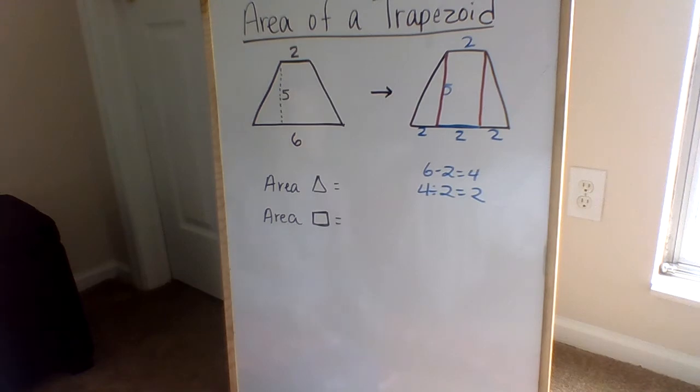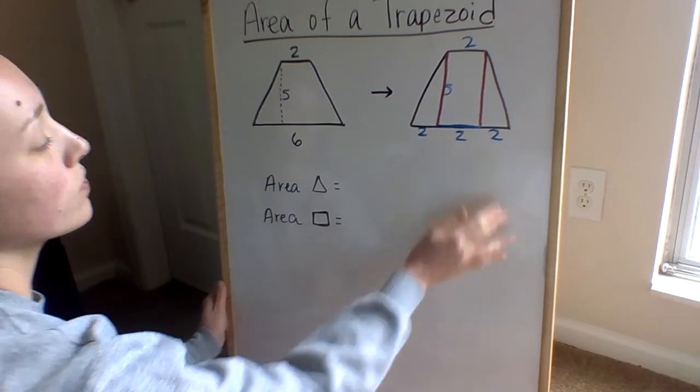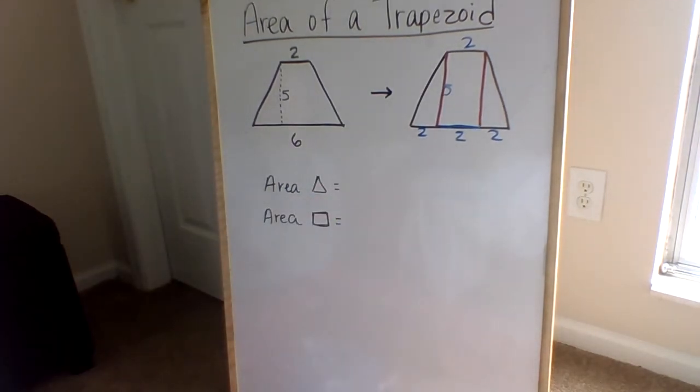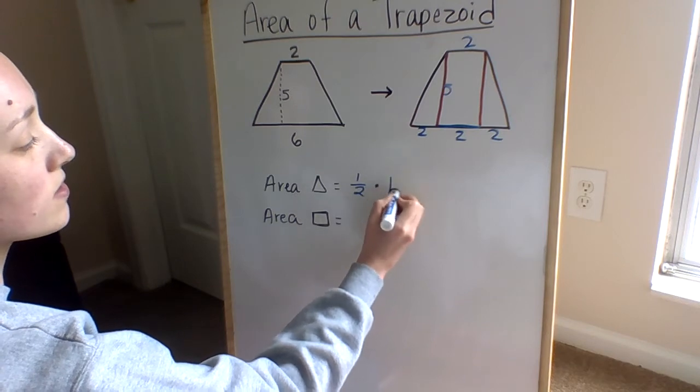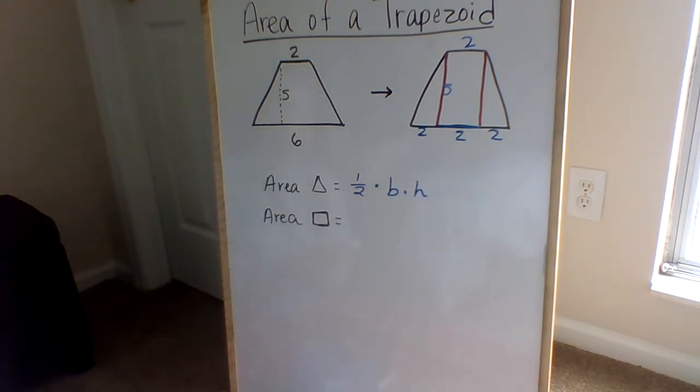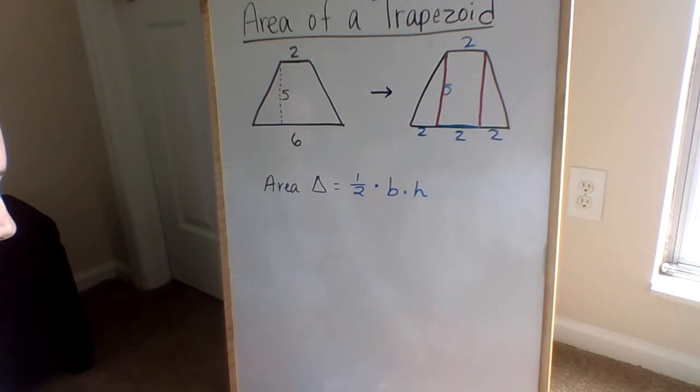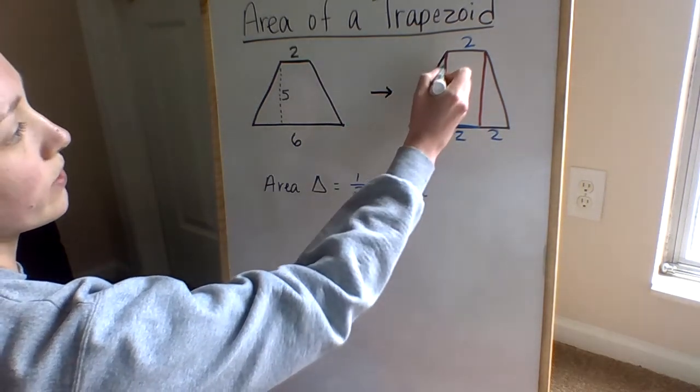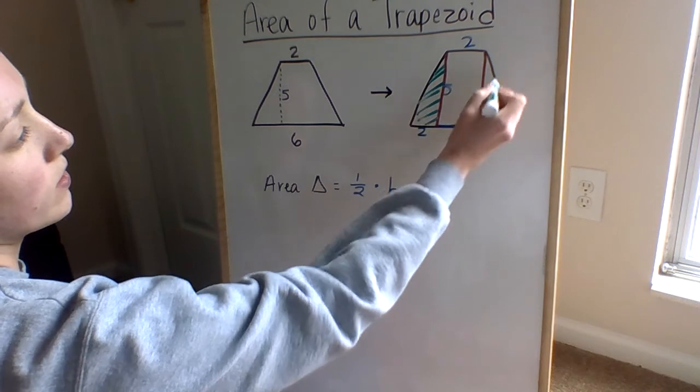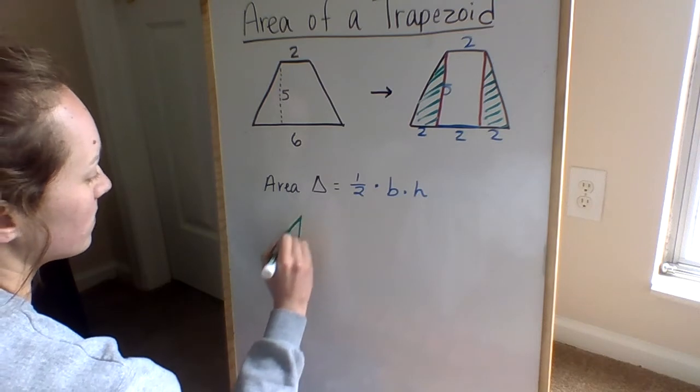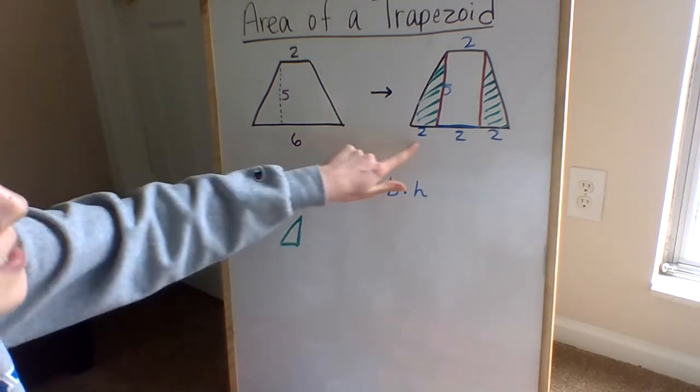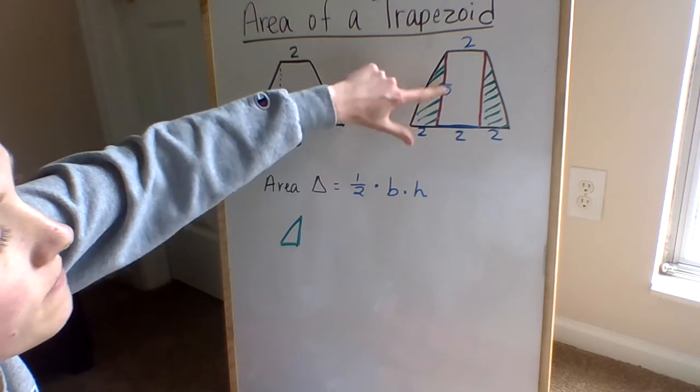Now we need to find the area of all of our different shapes. So looking at just our triangles, what is the formula for finding the area of a triangle? Good. It is one half times the base times the height. So going from there, let's look at our triangles that are shaded in green. They're going to be the same area because they both have the same base and the same height of five and two.